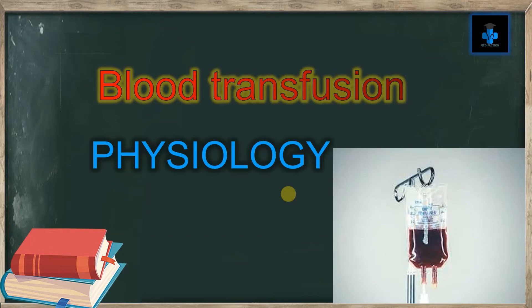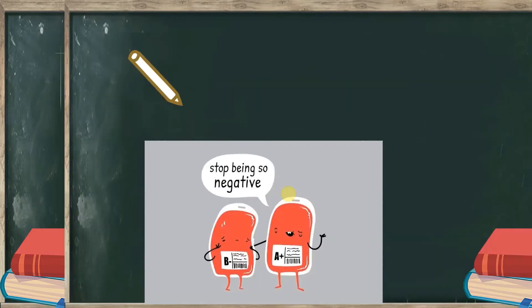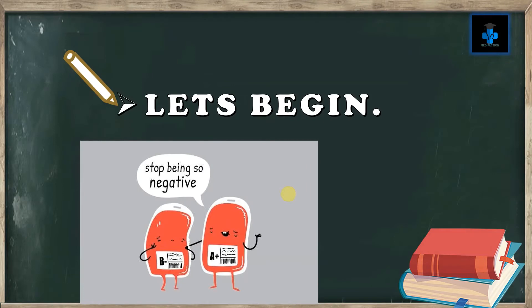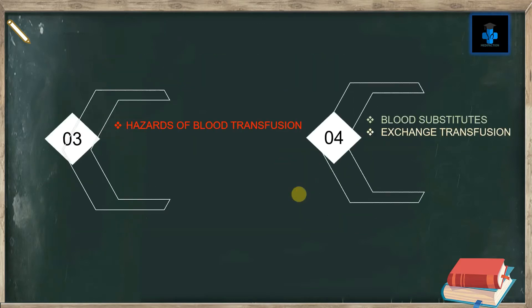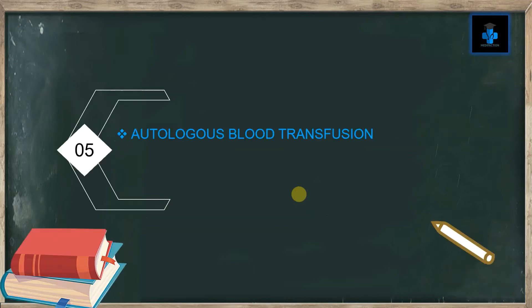Welcome to Medifaction. Today we will learn about the physiology of blood transfusion. Blood transfusion is a process of transferring blood or blood products into one's circulation intravenously. Transfusions are used for various medical conditions to replace lost components of the blood. In this video, I will be enumerating an introduction, precautions, hazards of blood transfusion, blood substitutes, exchange transfusion, and autologous blood transfusion.